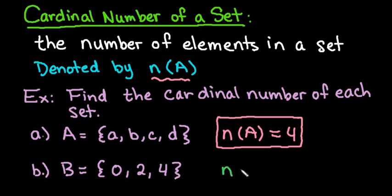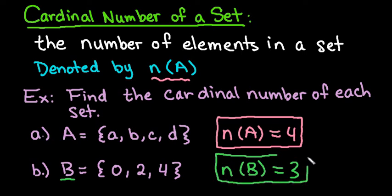So the cardinal number of set b, and I do change it to the set name, so since this one is named set b, I just changed this to b inside, and I would say that the cardinal number is 3 because there are 3 elements in the set.